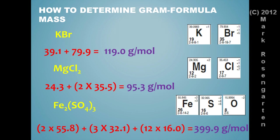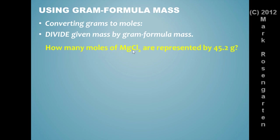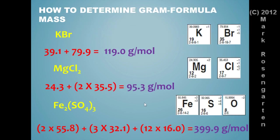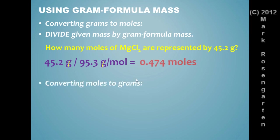Formula mass is very useful for doing mole calculations, as I'm going to show you right now, because it's got the units of grams and moles in it. So it can be used as a conversion factor to convert grams to moles and moles to grams. So if you want to convert grams to moles, simply divide the given mass by the gram formula mass. So if we have MgCl2, the formula mass of that was 95.3. So we're going to take 45.2 grams and divide it by the formula mass, 95.3 grams per mole. And that'll give us, after grams cancel, 0.474 moles. So we can use formula mass to convert grams to moles.